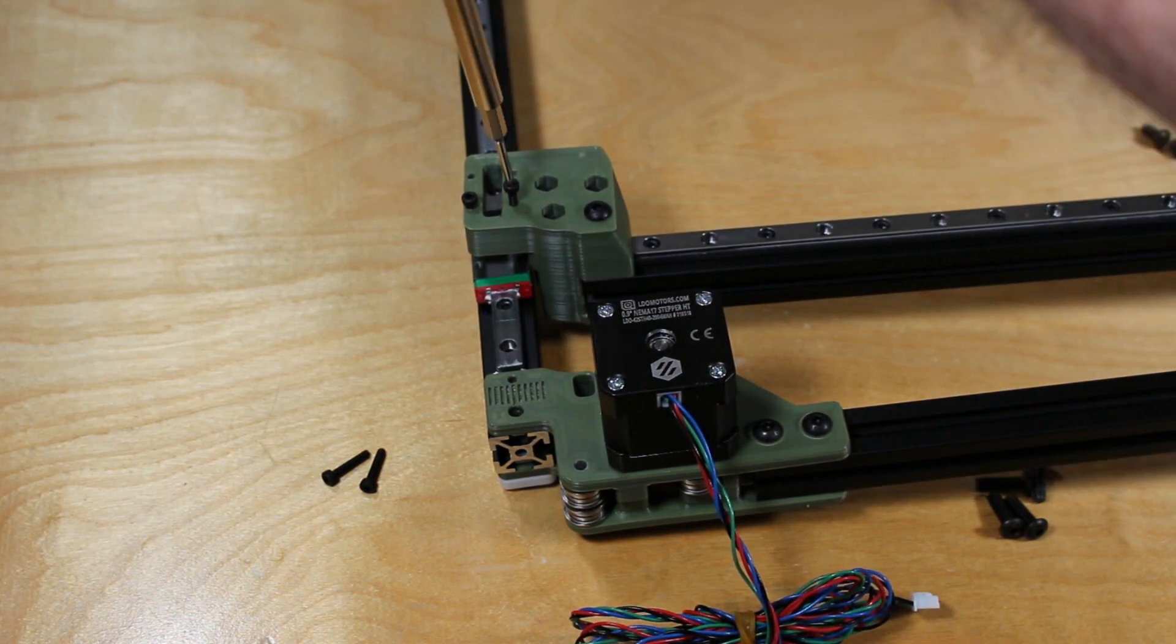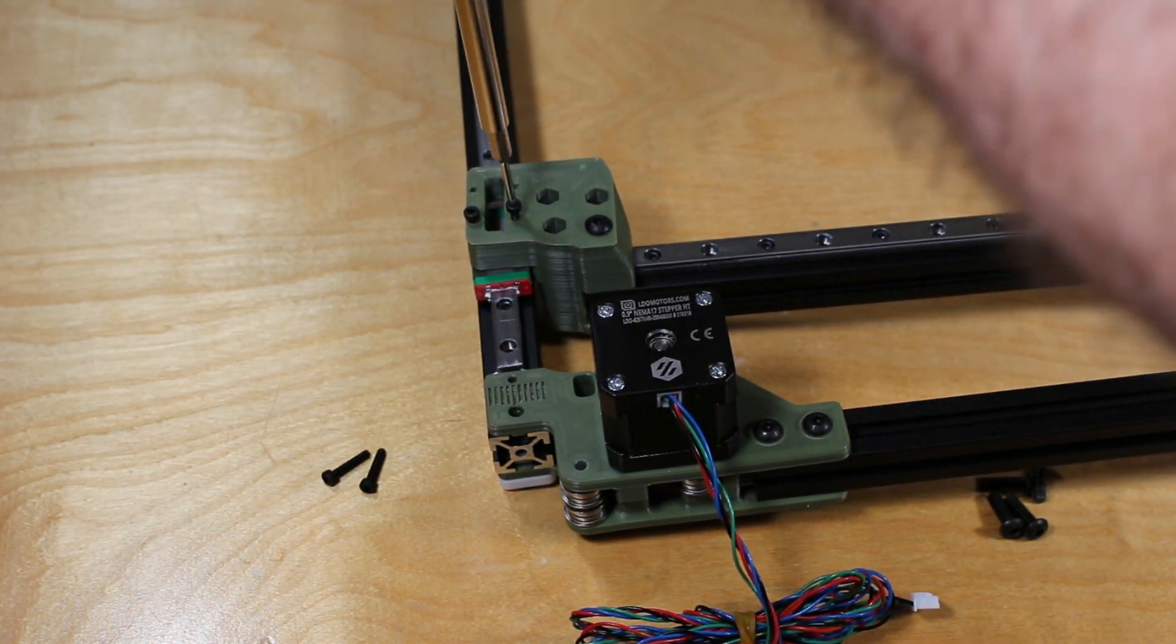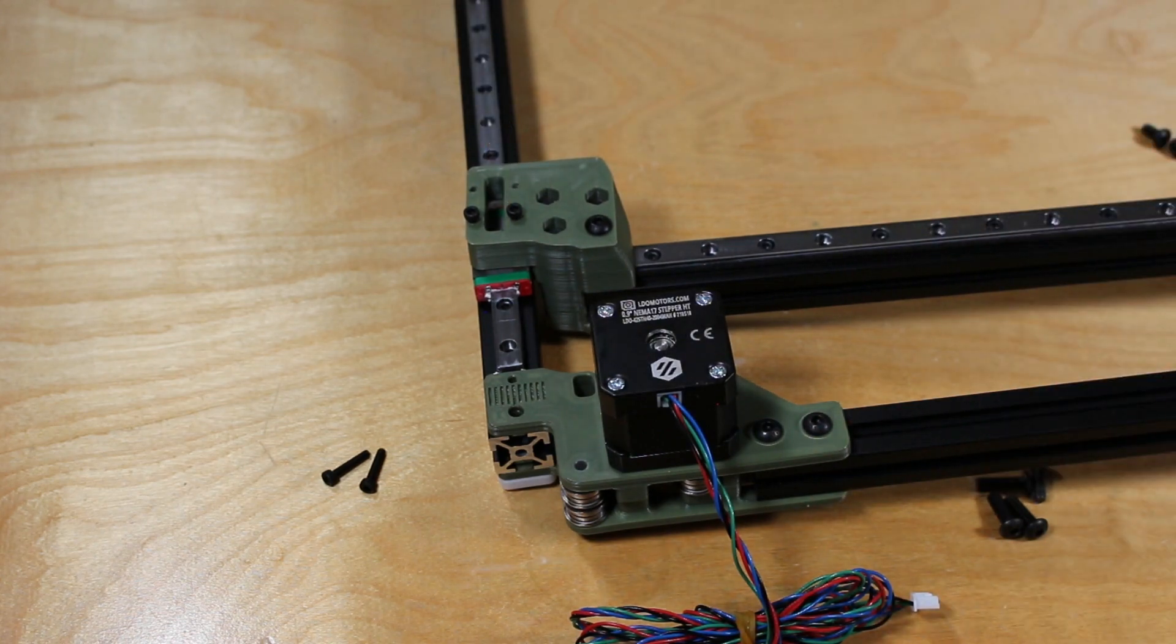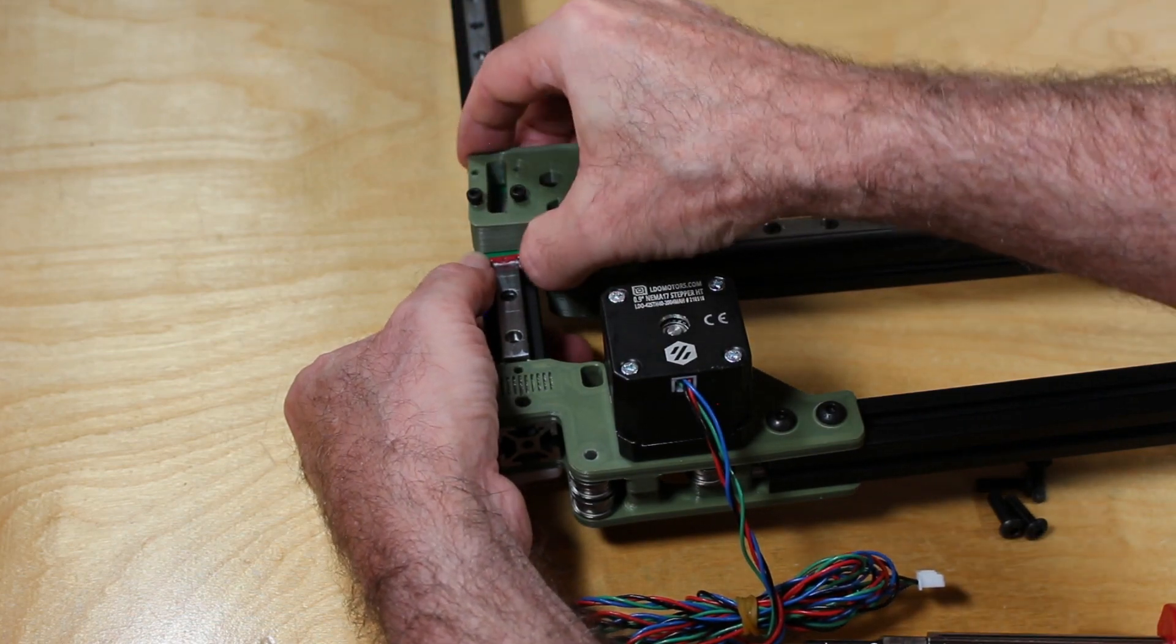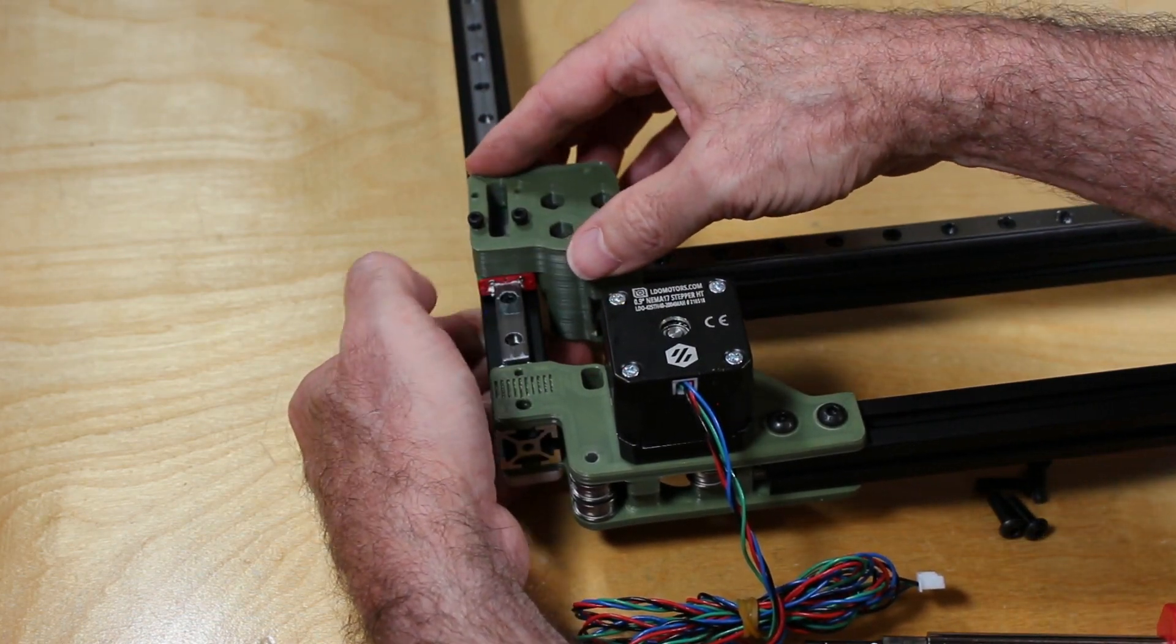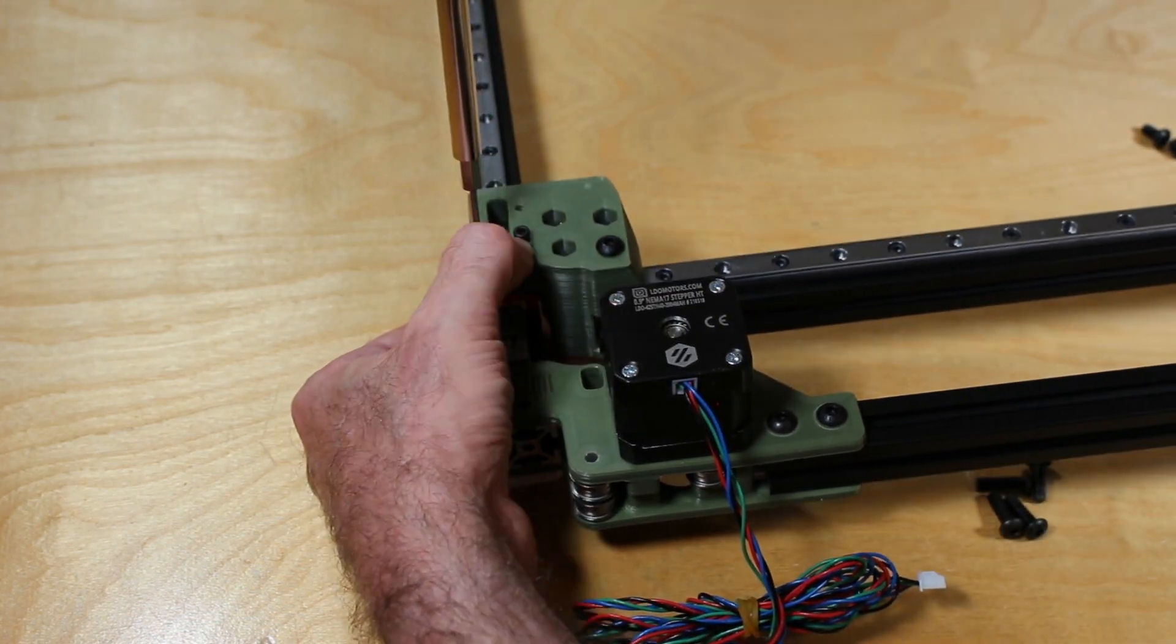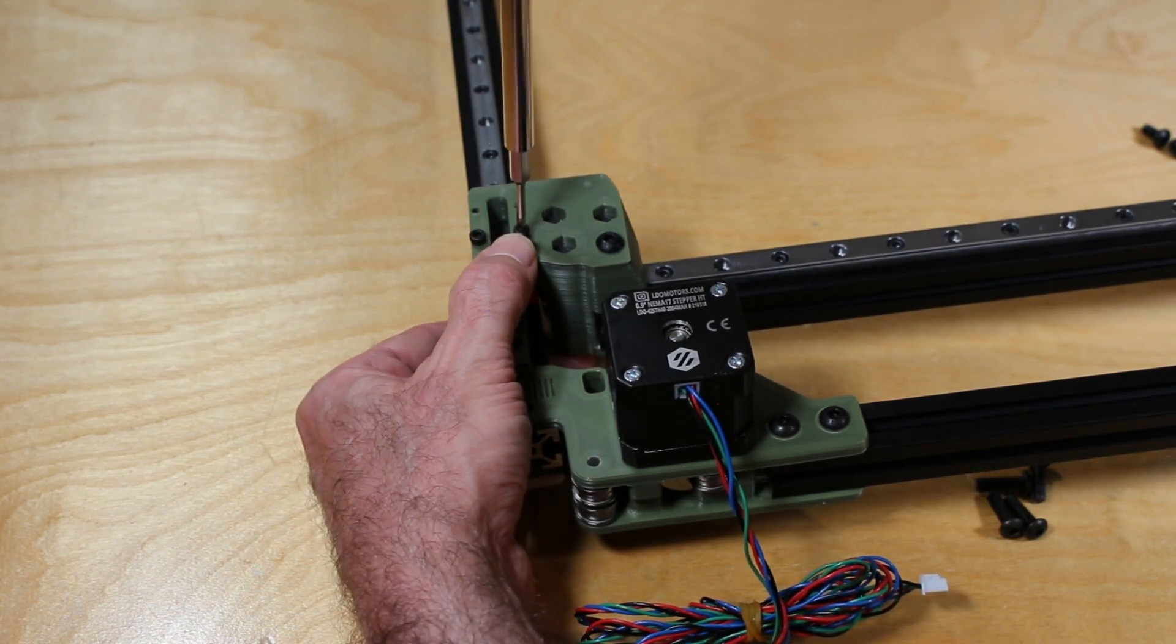And once I have those aligned, I can tighten these down. So here I'm aligning the screws with the threaded holes in the carriage. I want to make sure I do not strip or damage that carriage in any way. And once I have, you can go ahead and thread these in.